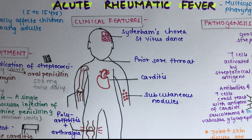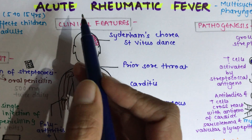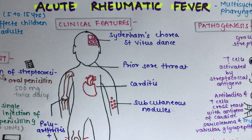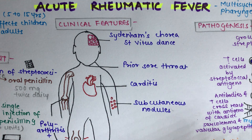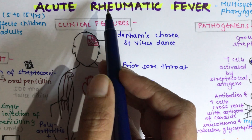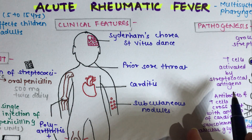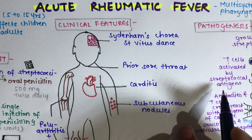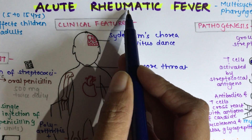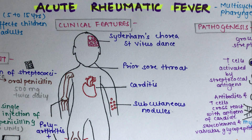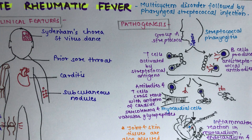What do we mean by acute rheumatic fever? Acute means the onset of the disease is sudden, occurring within days to weeks. Rheumatic refers to conditions characterized by inflammation or pain in the muscles, joints, or fibrous tissue. Fever is a rise in temperature. Basically, this disease involves inflammation of the joints with cardiovascular involvement, making it a multi-system disorder.